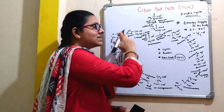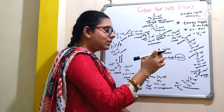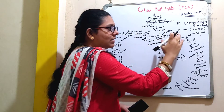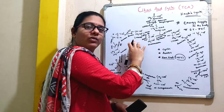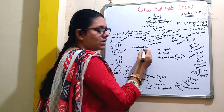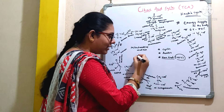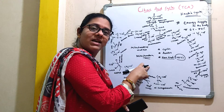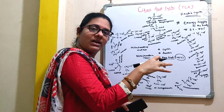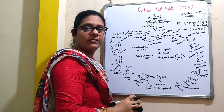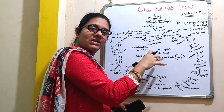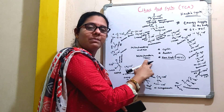This Krebs cycle is a cyclic process that operates under aerobic conditions, that is in presence of oxygen. Moreover, the enzymes responsible for carrying out this pathway are present in the mitochondria matrix, so this pathway takes place in mitochondria. Whereas glycolysis takes place in the cytoplasm because the enzymes required to carry out glycolysis are present in the cytosolic fraction of a cell.